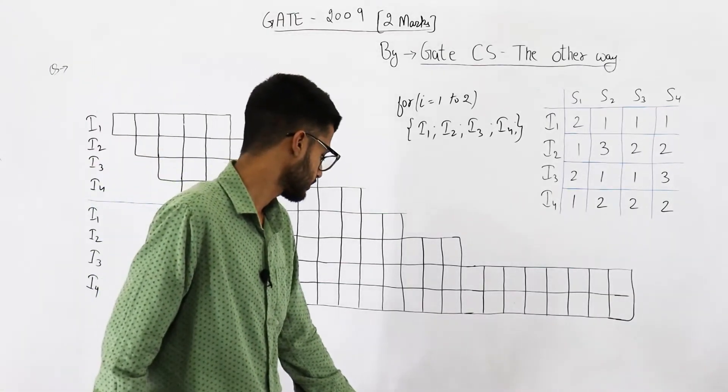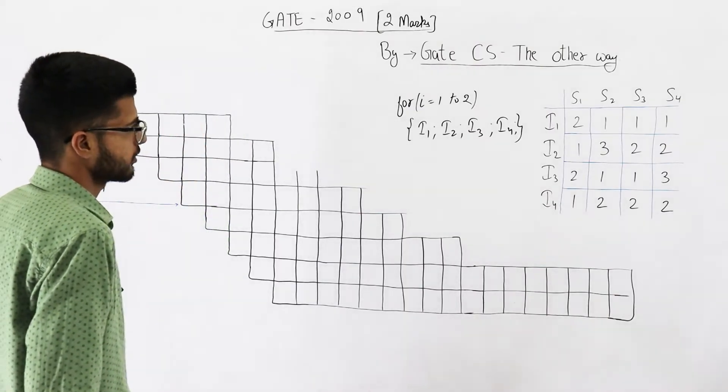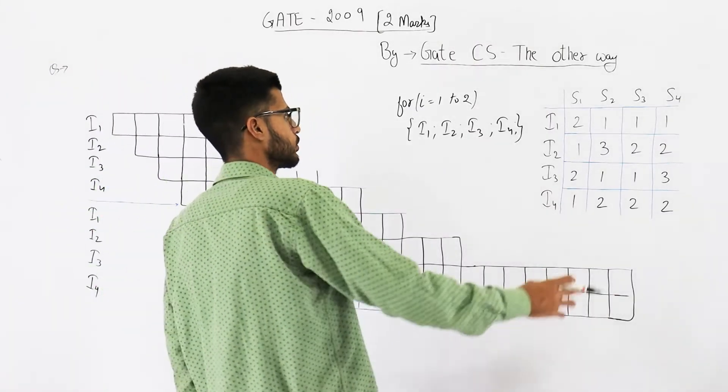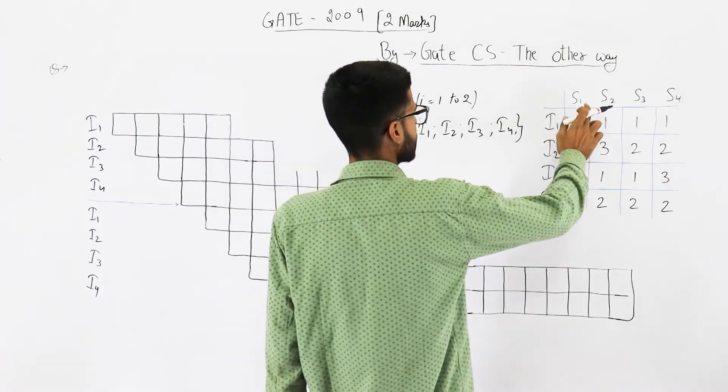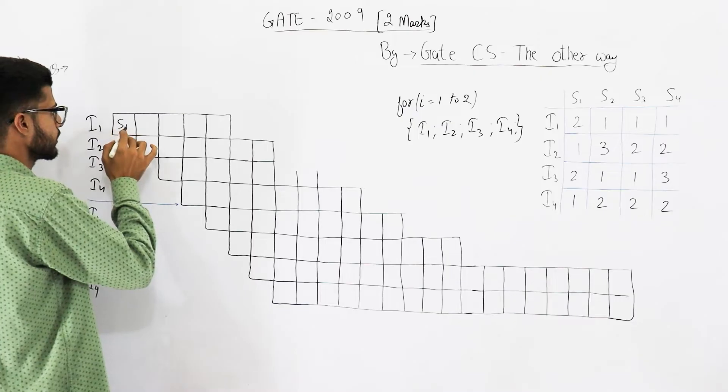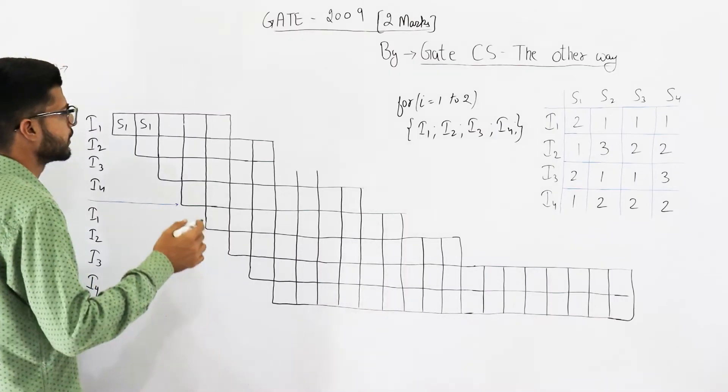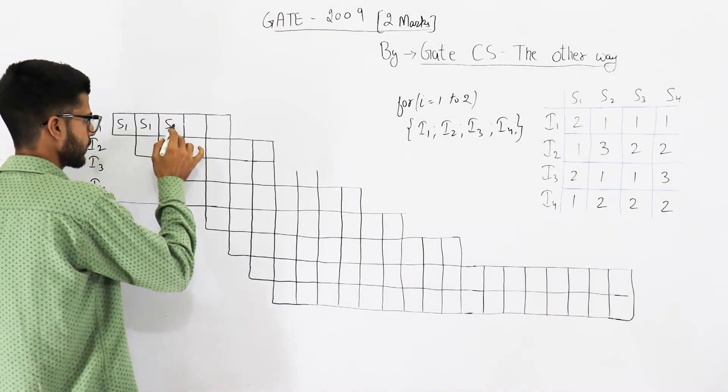Now let's try to execute these instructions. Instruction number one requires two clock cycles in s1 stage. That means first two clock cycles will be s1 and s1, then the remaining three stages require one clock cycle each.